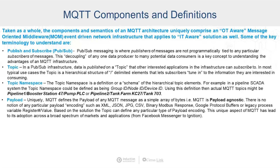Under that, we have the payload. PubSub publishes messages that have both a topic and a payload. Uniquely, MQTT defines a payload as a simple array of bytes — it's payload agnostic. There's no notion of a particular payload encoding such as XML, JSON, CSV, a binary Modbus response, a Google protocol buffer, or any sort of legacy register value pairs. Based on the solution, a topic can define a particular type of payload encoding. This unique aspect of MQTT has led to its adoption across a broad spectrum of markets and applications, from Facebook Messenger to Ignition.